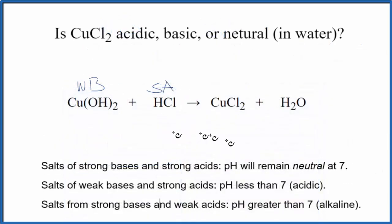Once we know that we can look at the rules here. We have a weak base and a strong acid. Here's strong base, weak base, strong acid. pH should be less than 7. That means it's going to be acidic.